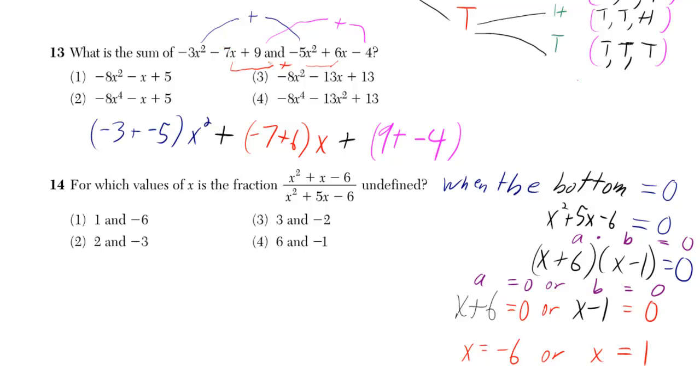We have negative 7x and we have 6x connected in blue, so we just add up negative 7 and 6. In pink we have 9 and negative 4, so you just add those up.